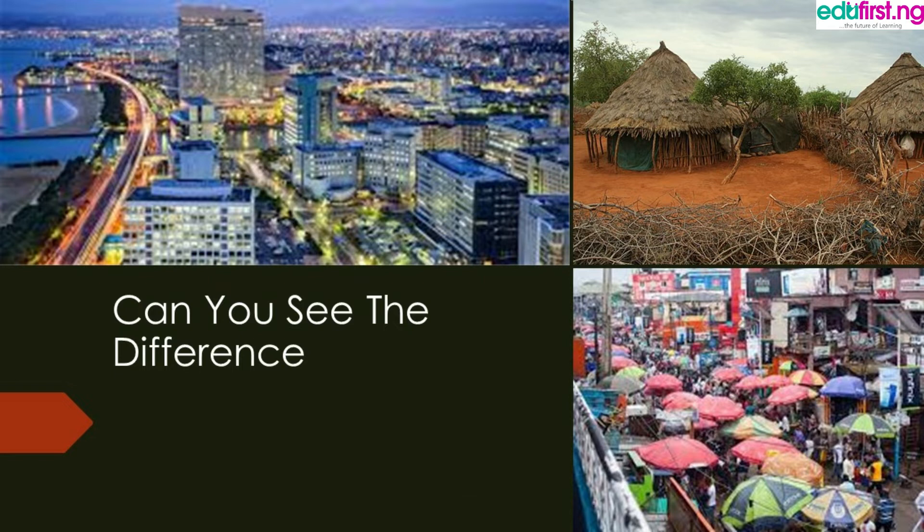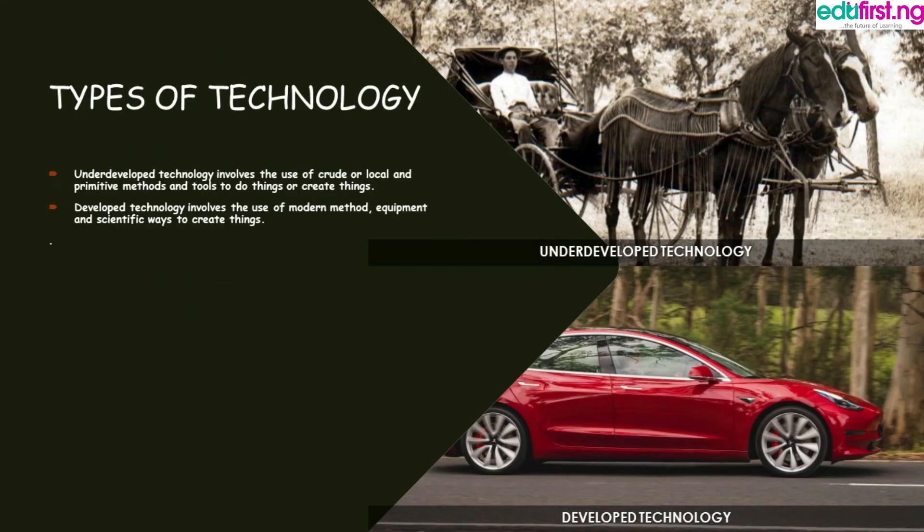There are two types of technology: underdeveloped and developed. Underdeveloped technology is technology of the old days — it was the usage of local methods to create tools. But now developed technology is a modern method, and you can see the examples there: a car and more.